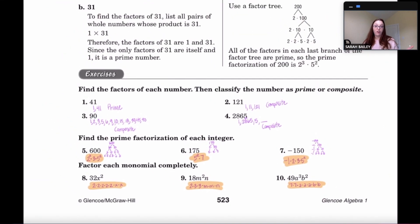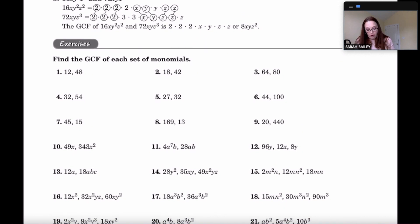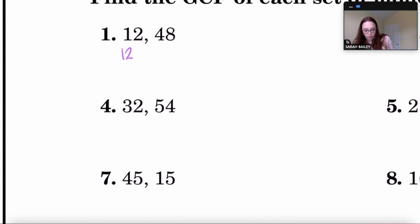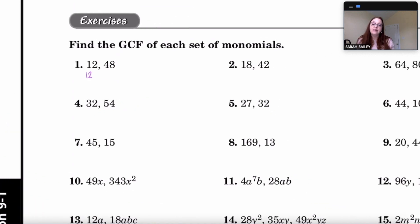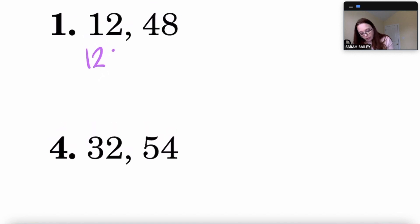Now we find the greatest common factor of monomials. You likely learned GCF in sixth grade. For 12 and 48, instead of just listing all factors, we'll use prime factorization. For 12: 2 times 6, and 6 is 2 times 3, giving 2 × 2 × 3.